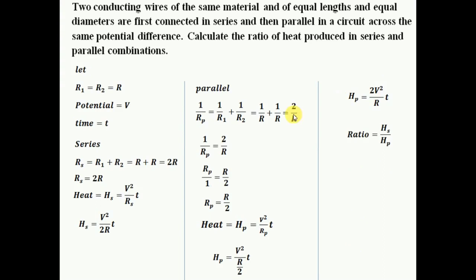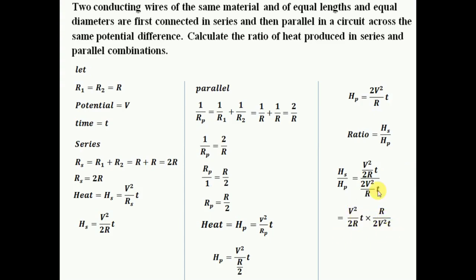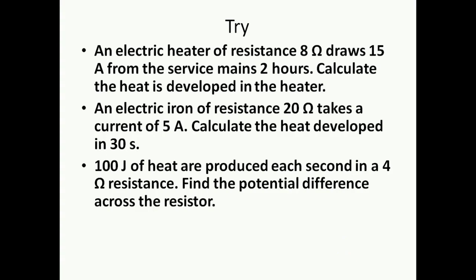Now I find the ratio H_s to H_p. Substituting the values of H_s and H_p and simplifying: V squared, T, and R all cancel. We are left with 1 divided by 2 times 2, which gives the ratio H_s to H_p equals 1 to 4. So the heat produced in series is one-quarter of the heat produced in parallel.